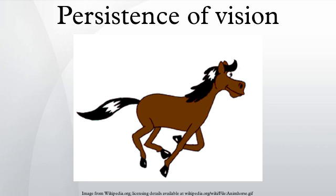Joseph Anderson and Barbara Fisher argue that the phi-phenomena privilege is a more constructionist approach to the cinema, whereas the persistence of vision privilege is a realist approach. The discovery of persistence of vision is attributed to the Roman poet Lucretius, although he only mentions it in connection with images seen in a dream. In the modern era, some stroboscopic experiments performed by Peter Mark Roget in 1824 were also cited as the basis for the theory.